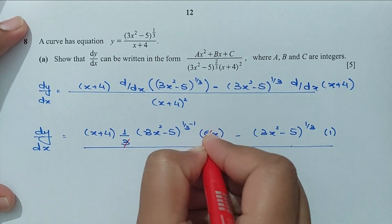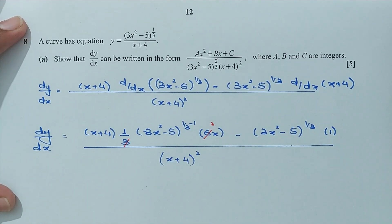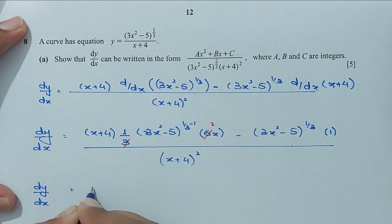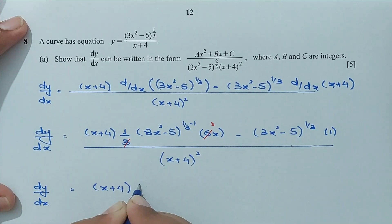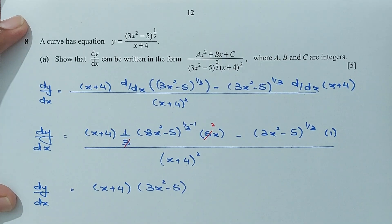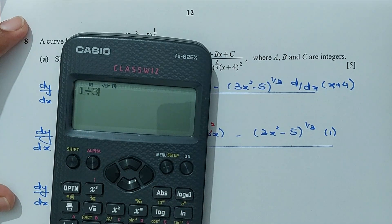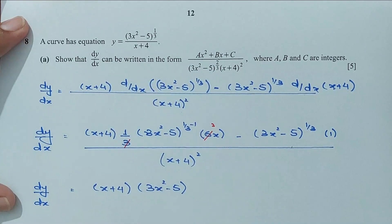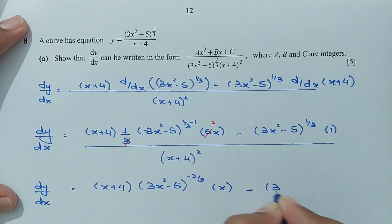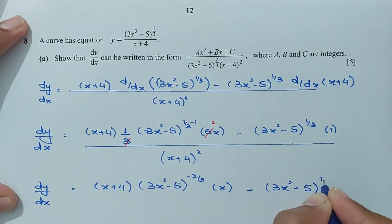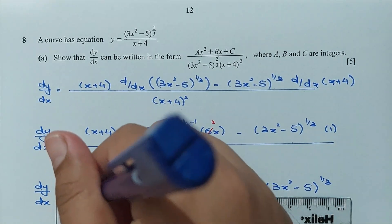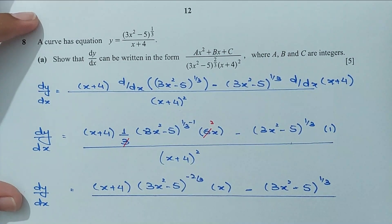Now we can simplify: 3 times 1 is 3, 3 times 2 is 6. So dy/dx is going to be (x + 4) times (3x² − 5) to the power (1/3 − 1), which is −2/3, and we have 6x, minus (3x² − 5) to the power 1/3, this whole divided by (x + 4) whole square.